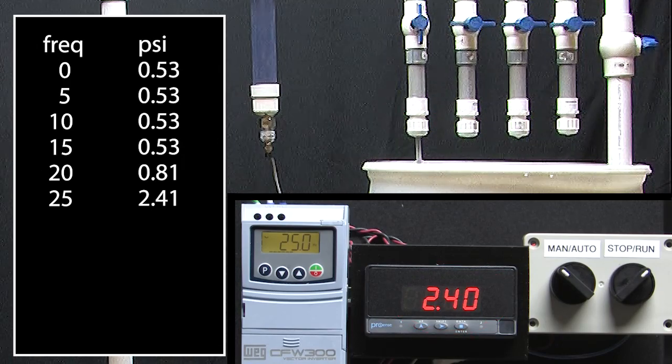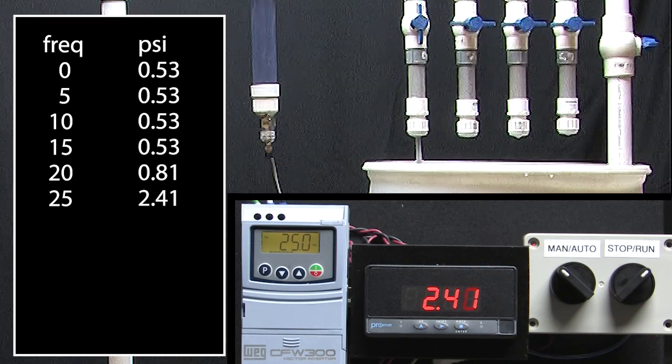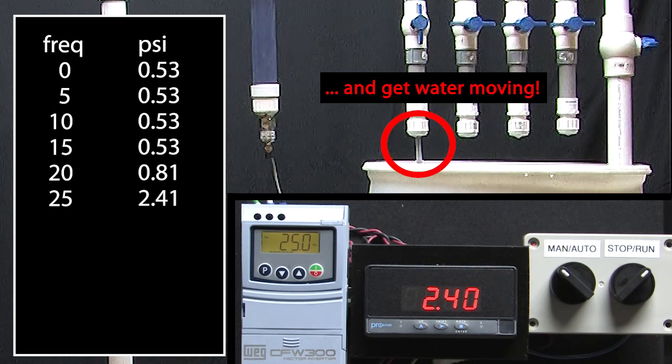A centrifugal pump needs some minimum speed to operate, right? For our system, it takes around 20 Hz to pump enough water to build up any back pressure.